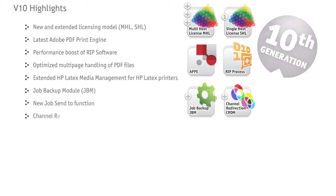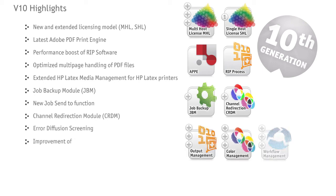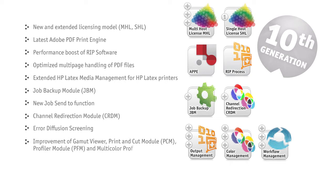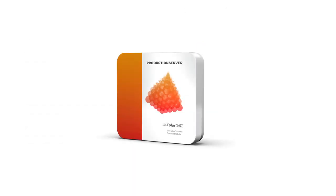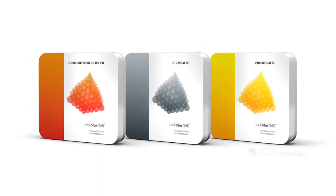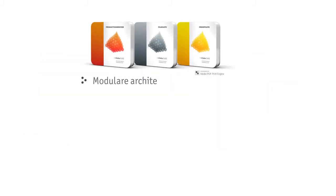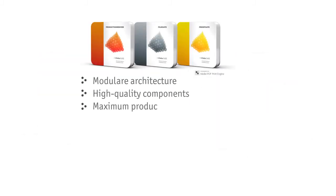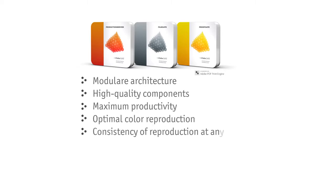New Functions and Modules: our products — Production Server, FilmGate and ProofGate — have continuously been enhanced. More performance and comfort with new RIP Software extensions, such as the Job Backup Module, the new Job Send To Function and the Channel Redirection Module. You can also expect further improvements in output, color, job and workflow management. ColorGate offers nuanced solutions for each application, production technology and environment, characterized by their modular architecture, which leads to nearly unlimited possibilities in terms of applications and extensions.